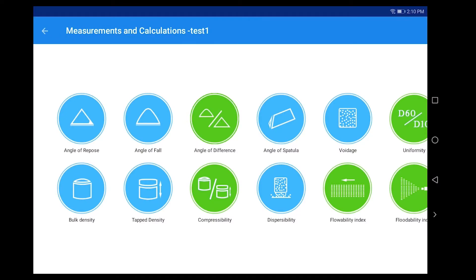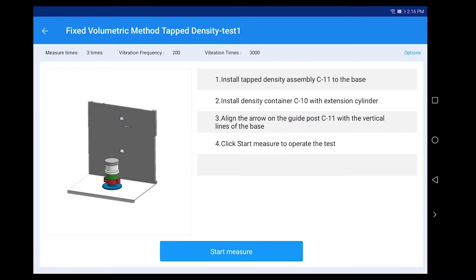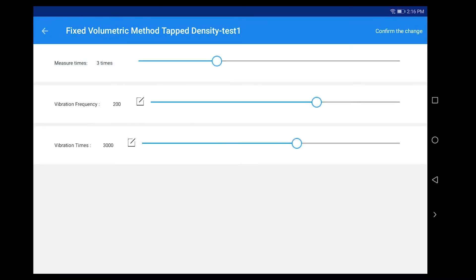Click Tap Density. Click Fixed Volumetric Method. Click Options. Set Measure Times, Vibration Frequency, and Vibration Times as required.